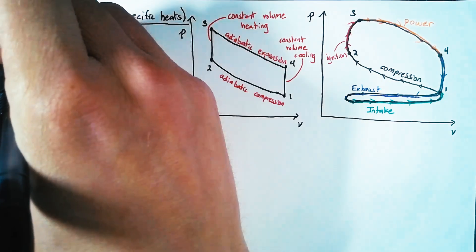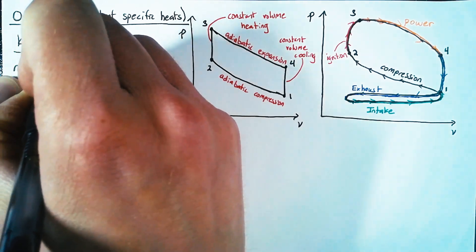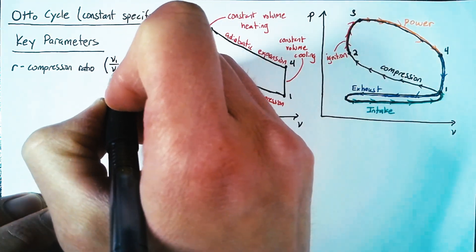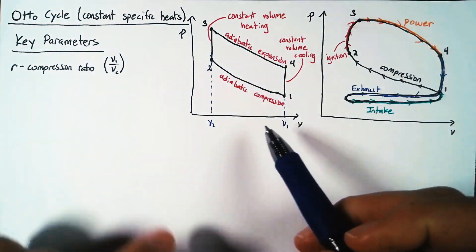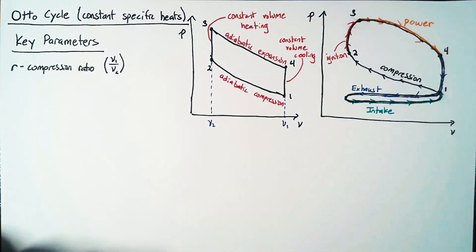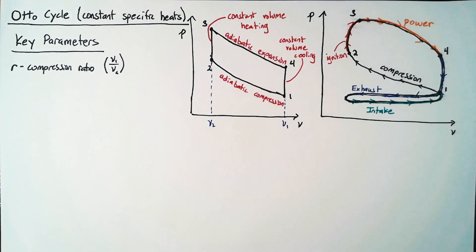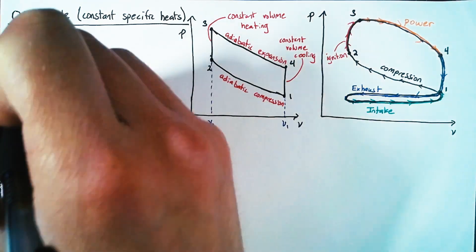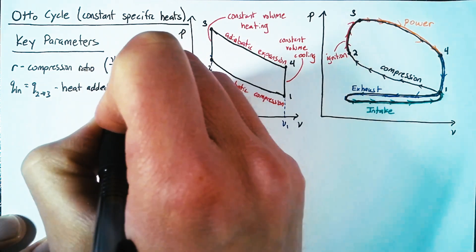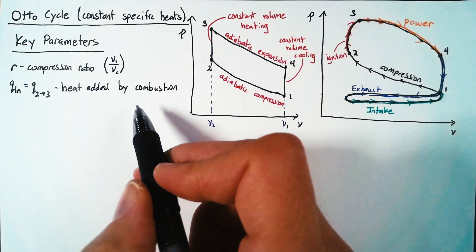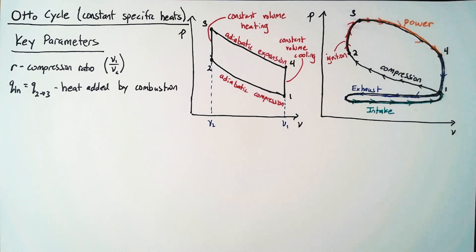Let's look at some key parameters that define this cycle. First, we have the compression ratio, which we call R, equal to V1 over V2 — where V1 is our maximum volume and V2 is our minimum volume. Note that V1 also equals V4, and V2 also equals V3. Another key parameter is the amount of heat added, Qn — the heat transfer between states two and three during combustion. The amount of work we get divided by Qn tells us how efficient our engine is, so Qn is a really key term.